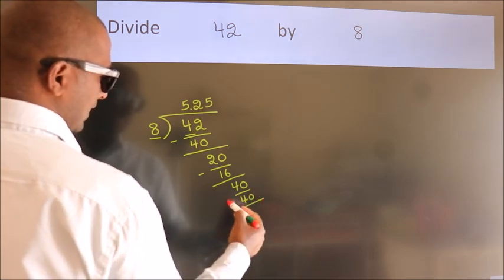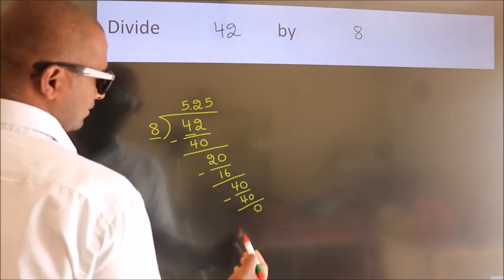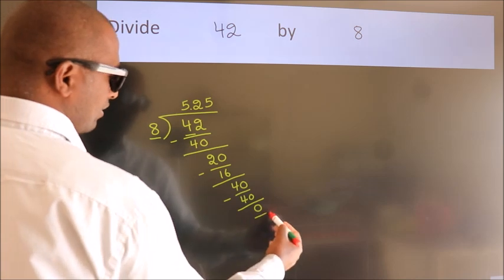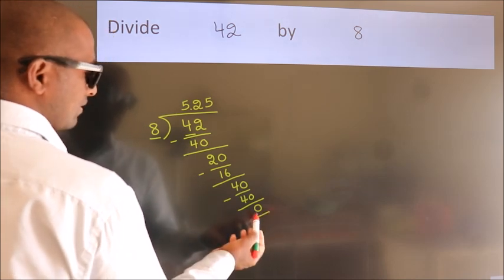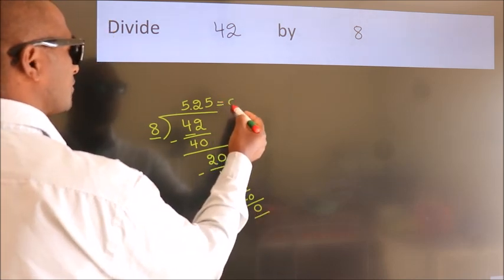Now we subtract. We get 0. Here we got remainder 0, so this is our quotient.